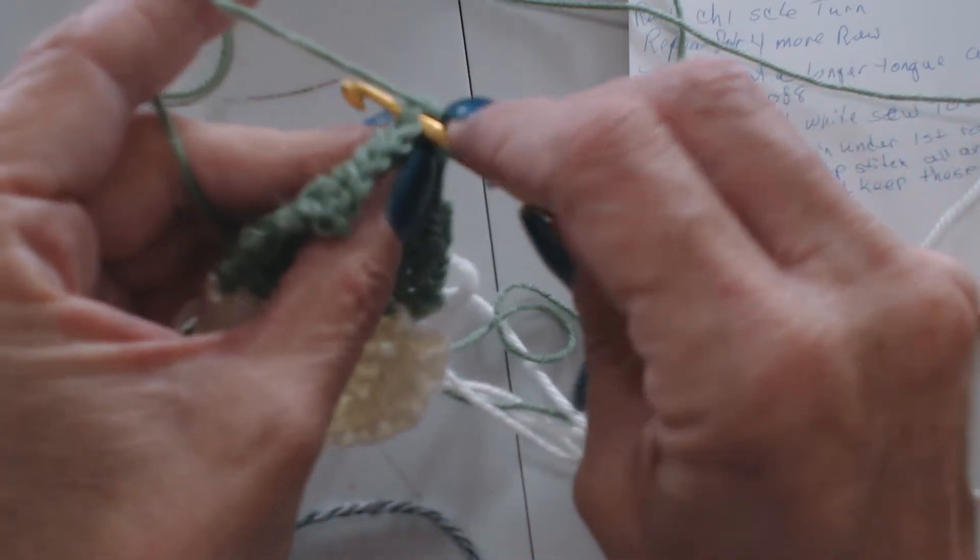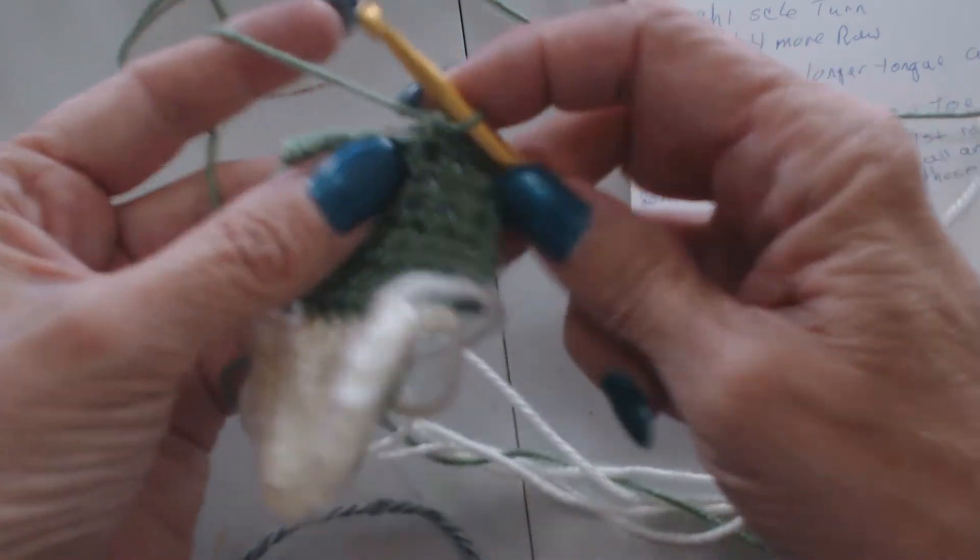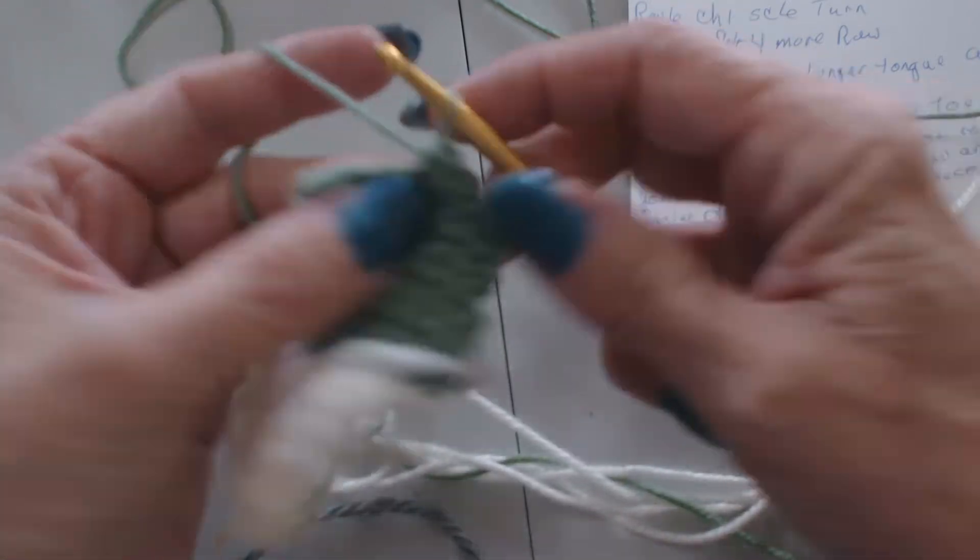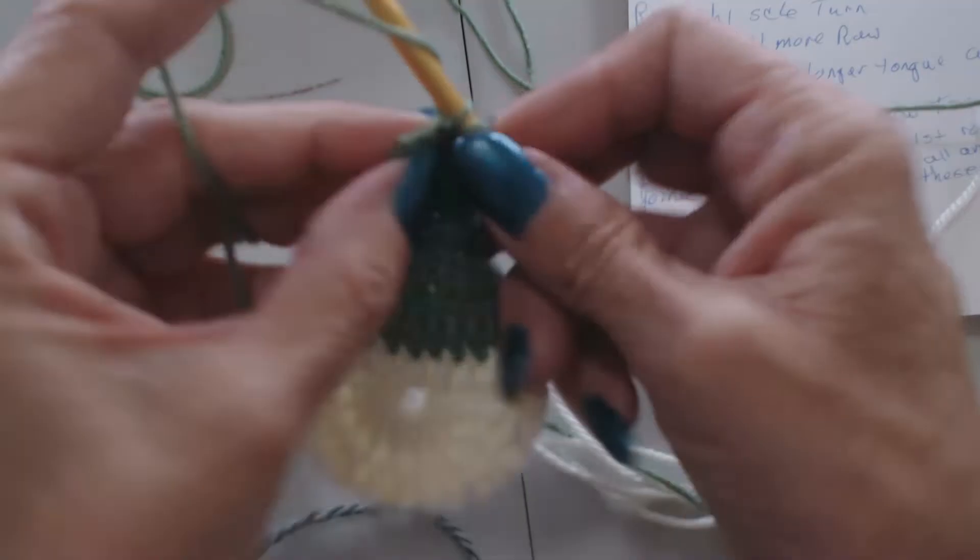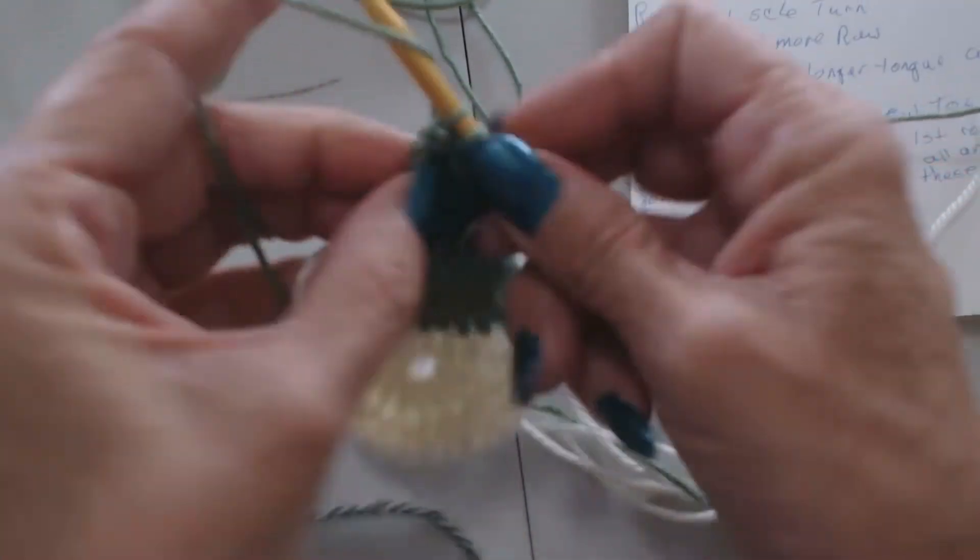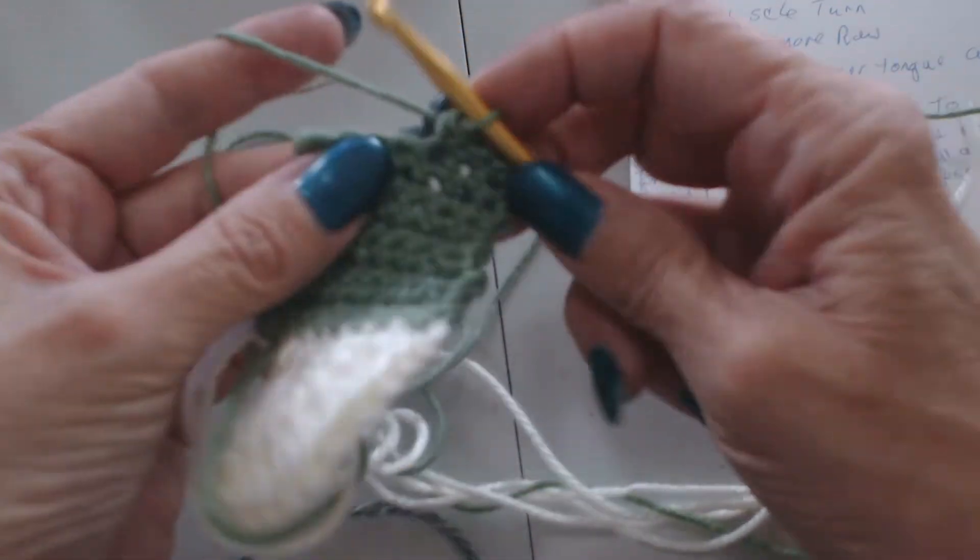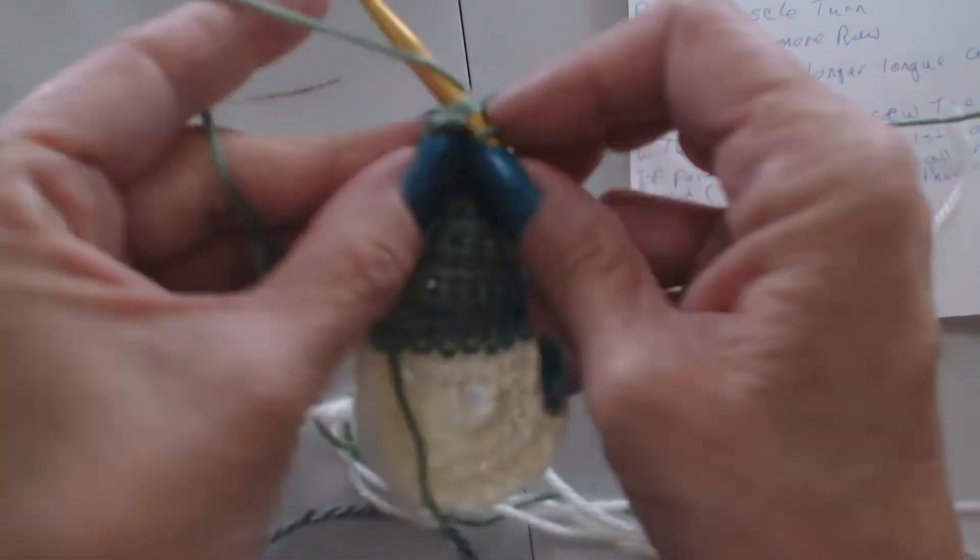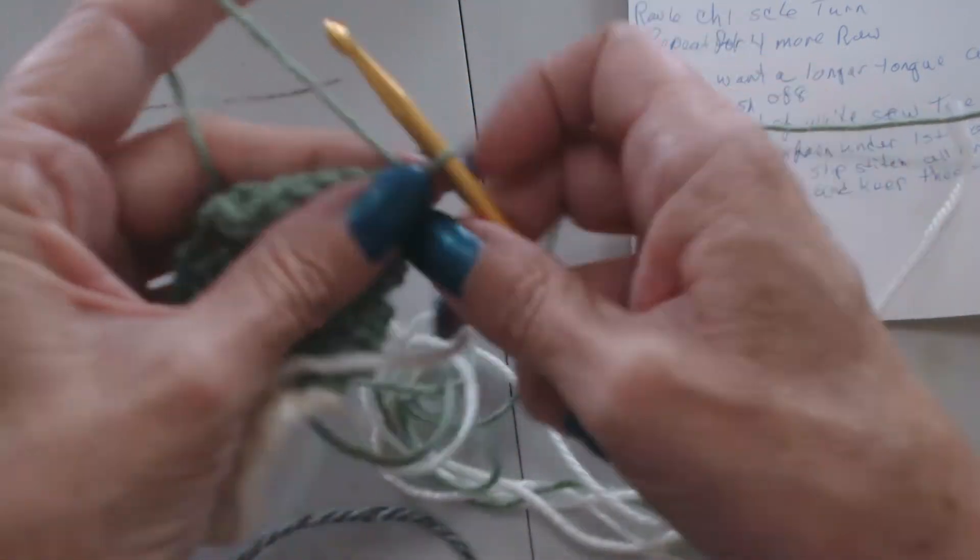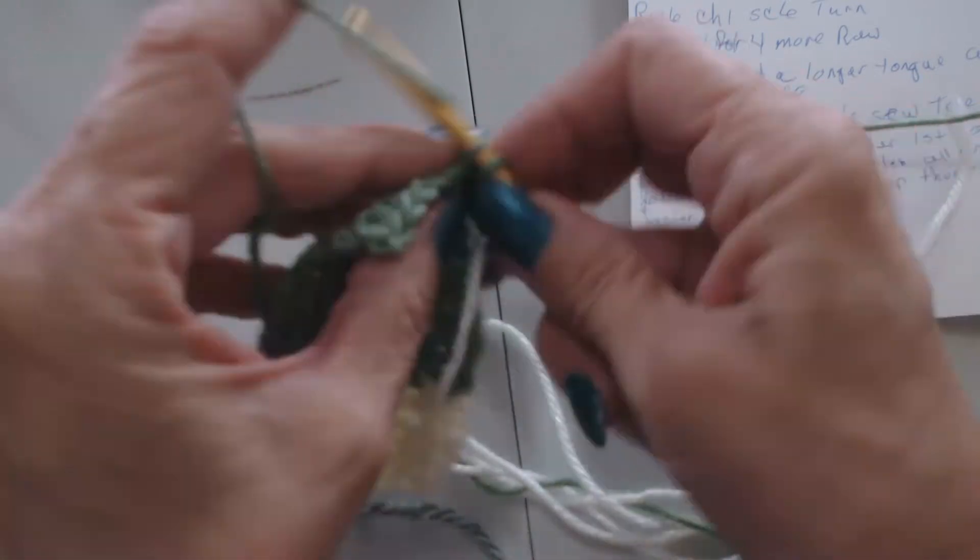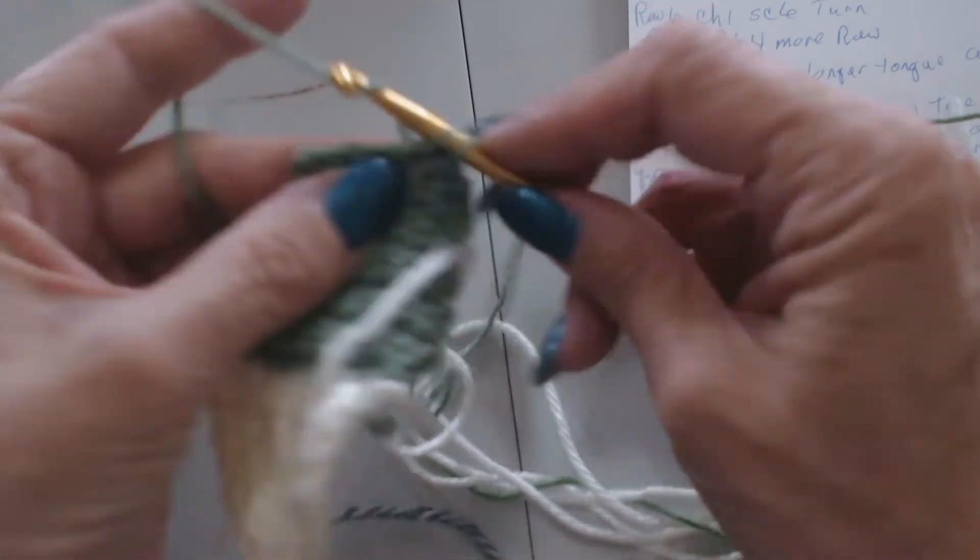Now me, I will probably add at least two more rows on, if not three, only because I like my tongue a little bit long. Now me, I'm just about there. We'll check this up against the shoe.